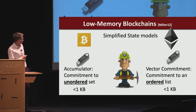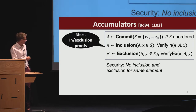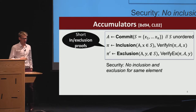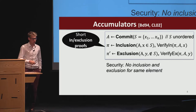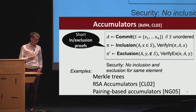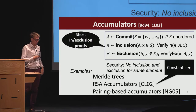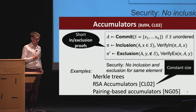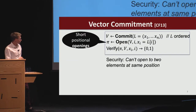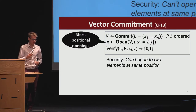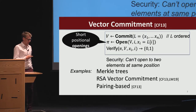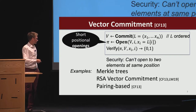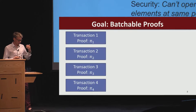An accumulator is a commitment to an unordered set and supports short inclusion and exclusion proofs—saying that something is in the set or not in the set. The security property is that for no element can you give both an inclusion proof and an exclusion proof. We can instantiate accumulators from Merkle trees. The one I'll focus on is RSA accumulators, which have the nice property that inclusion and exclusion proofs are constant size. Vector commitments are a commitment to an ordered list supporting positional openings; again, proofs are constant size from RSA groups.